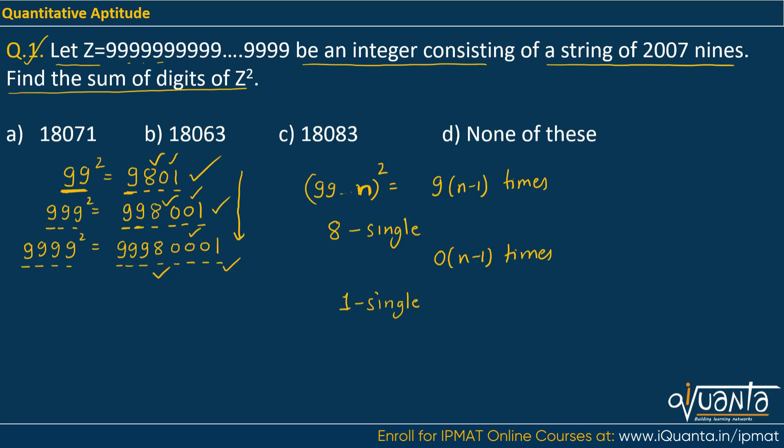Now we've been given a string of 2007 nines. If we square it, we'll be getting 9 repeated 2006 times, then a single 8, then 2006 zeros, then the last digit will be 1. We have to find the sum of its digits. So we multiply 2006 into 9 plus 8 plus 1, which gives 18063. Option B is the correct answer. This was very easy if you recognize the pattern.